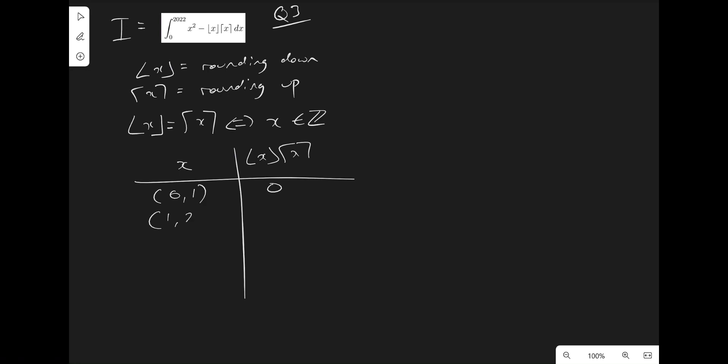If we do the same thing from 1 to 2, it's going to round down to 1 and round up to 2. So it's going to be 1 times 2. Similarly, for 2 to 3, we round down to get 2 and round up to get 3, times them together, and that gives us 6.